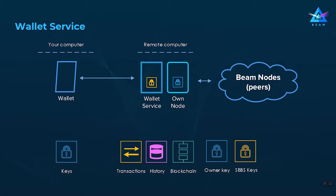The idea behind the Beam wallet service is to separate the part responsible for managing transaction state, history, and blockchain events from the part that manages your keys. Your wallet becomes a very thin client that only manages keys, signatures, and the secret parts of transaction creation. All other functionality — transaction state management, transaction history database, and blockchain events — is delegated to a remote service running constantly on another machine, which your wallet connects to for sending and receiving Beam.